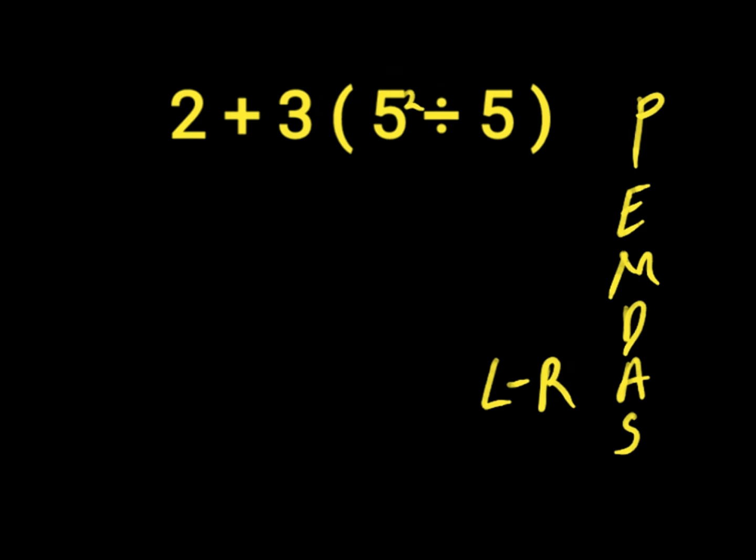First of all we solve our parentheses. In our parentheses we have an exponent which is 5 to the power of 2. So 5 to the power of 2 will give us 25 which is 5 times 5. Then we divide it by 5.